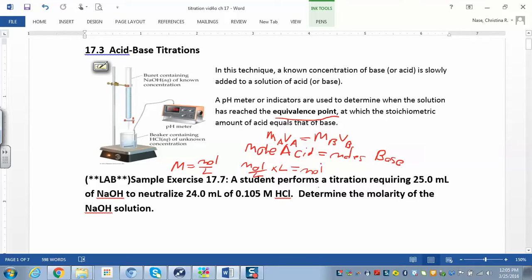So in this problem down here, you perform a titration and it requires 25 mL of sodium hydroxide to neutralize 24 mL of 0.105 M HCl. Determine the molarity of the sodium hydroxide. So in this problem we know the molar concentration of the acid, we know the volume of the acid.